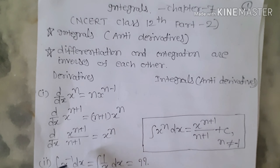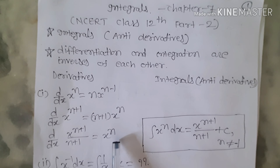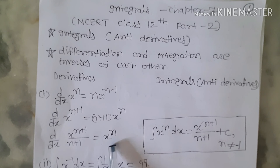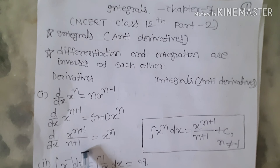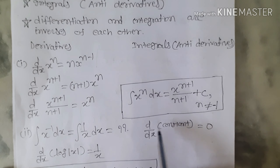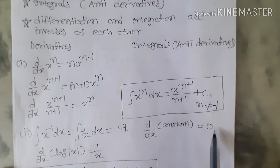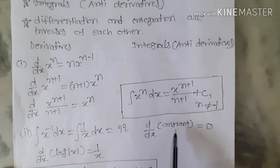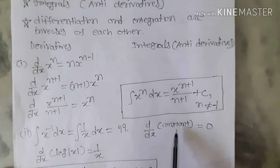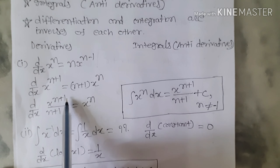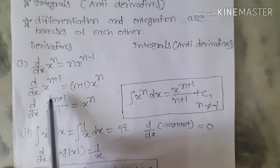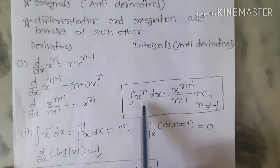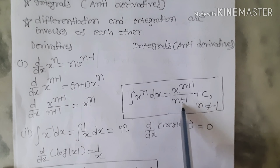This means when we differentiate x^(n+1)/(n+1), we have x^n. In other words, when we find the integral of x^n, we get x^(n+1)/(n+1). Also, differentiation of any constant with respect to x gives 0, and differentiation of constant is 0, so integration of 0 is a constant. Therefore, integral of x^n dx equals x^(n+1)/(n+1) plus a constant.